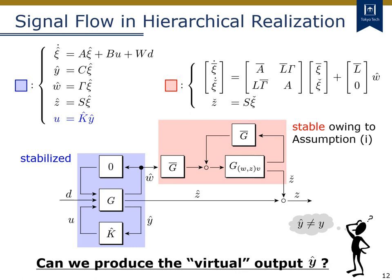Let's summarize the signal flow in the hierarchical realization by a block diagram. The upstream system highlighted by the blue box is stabilized by the feedback controller, while the downstream system highlighted by the red box is initially stable owing to assumption 1. Therefore, the control policy of u can be a retrofit control policy, because the entire system is stable for any environment G-bar such that the red system is stable. However, the implementation of this control policy is not trivial, because the output y-hat is not equal to the actual output y. So we need to produce this virtual output y-hat in some way to implement this control policy.